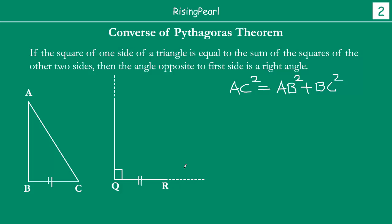Next, at Q we draw a 90 degree angle and draw a straight line. On this line, which is at a 90 degree angle, we measure AB and find a point P such that PQ is equal to AB. So we have angle Q at 90 degrees going straight up, and we measure length AB to find point P such that PQ equals AB. We then simply join P and R. This triangle PQR is the triangle we just constructed.